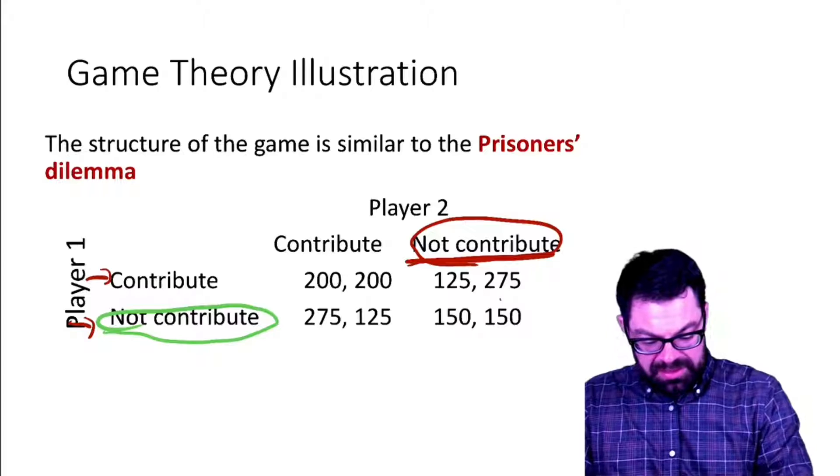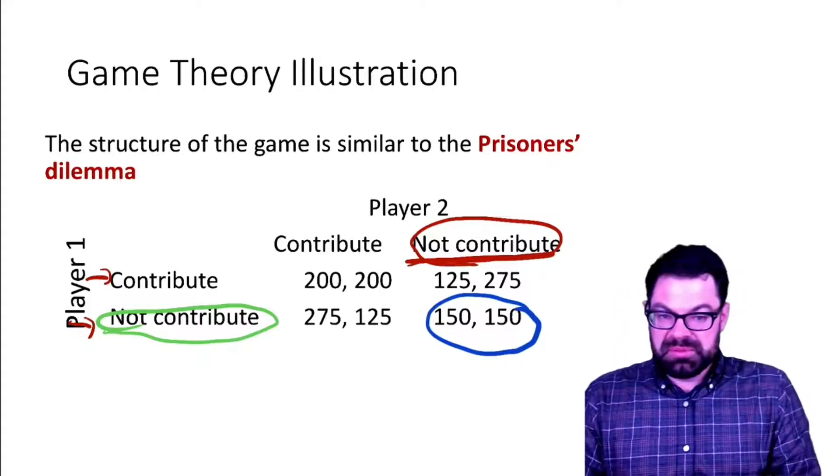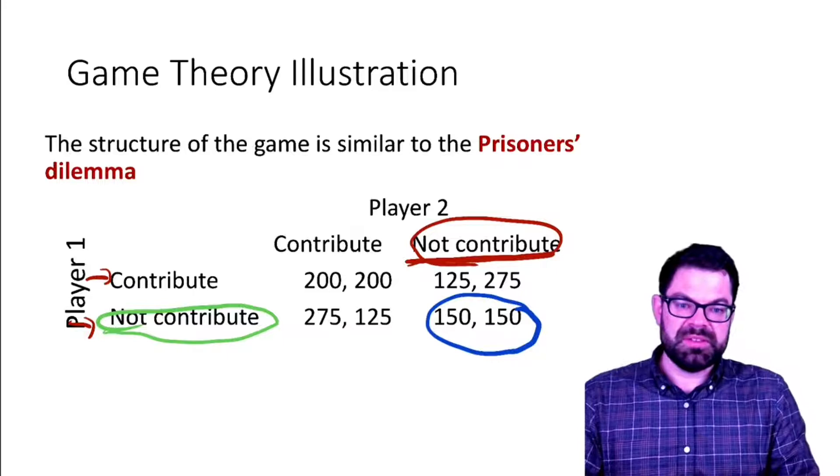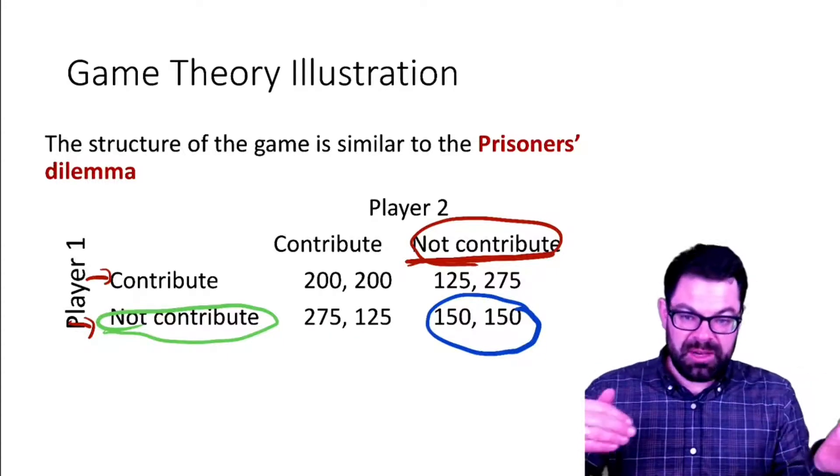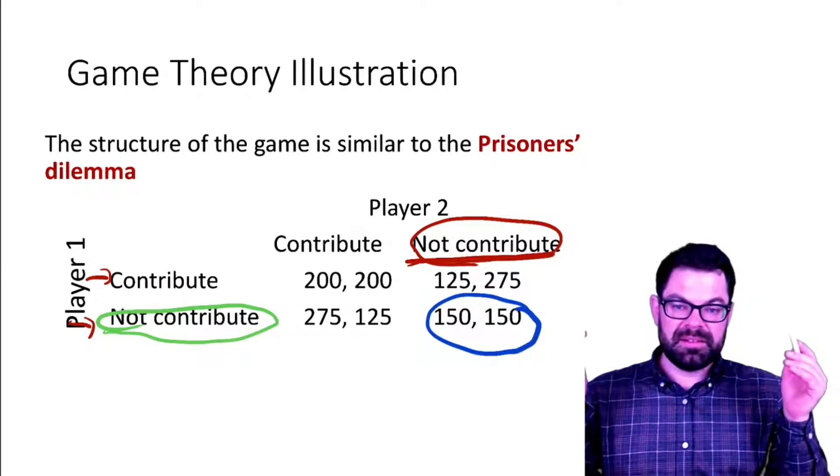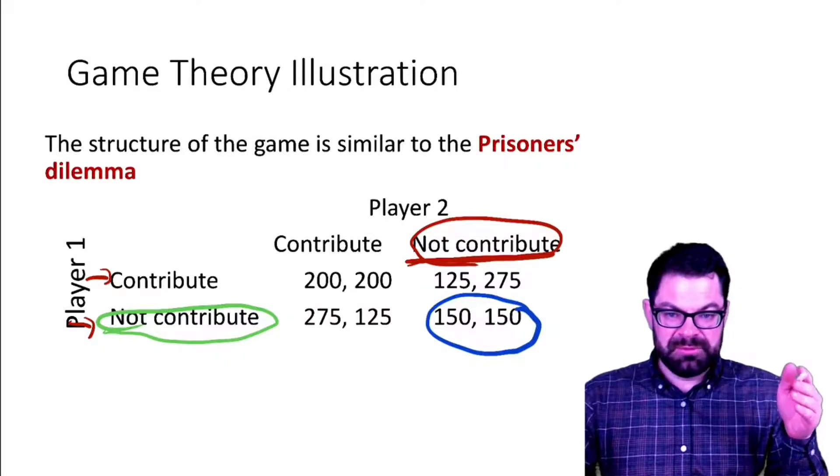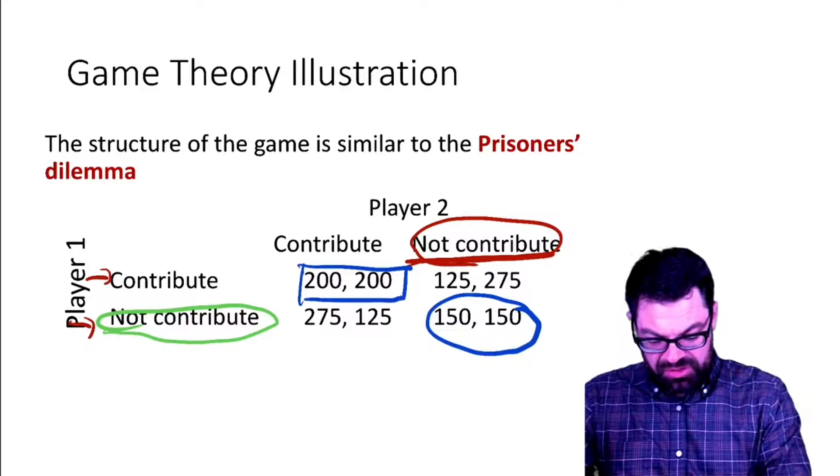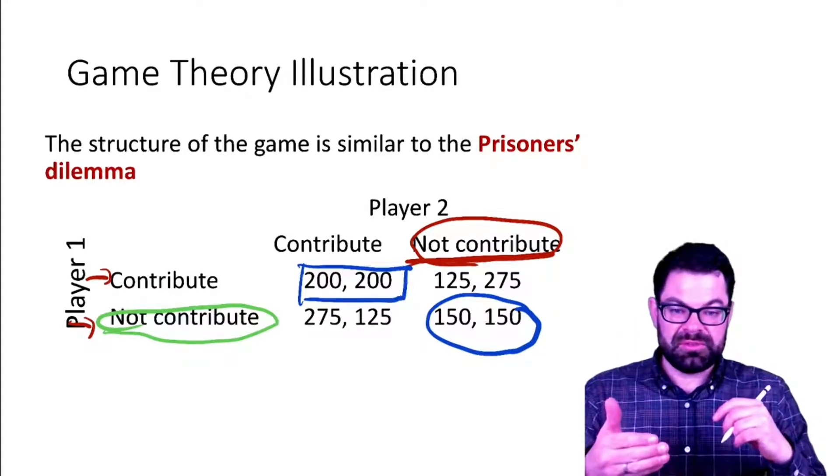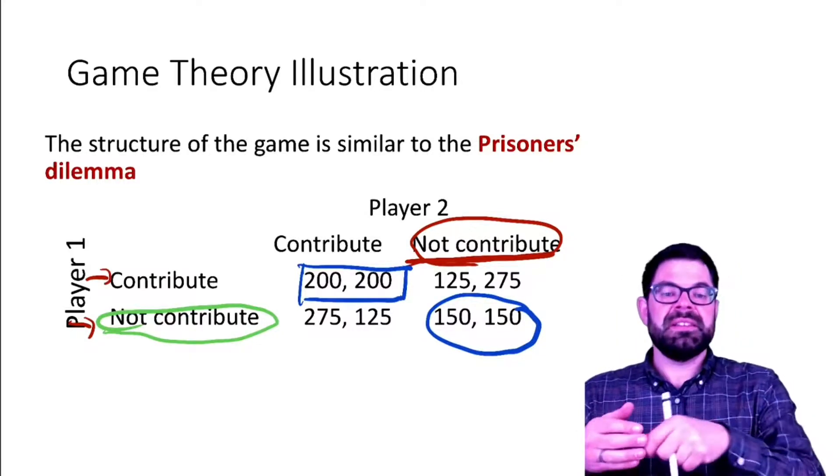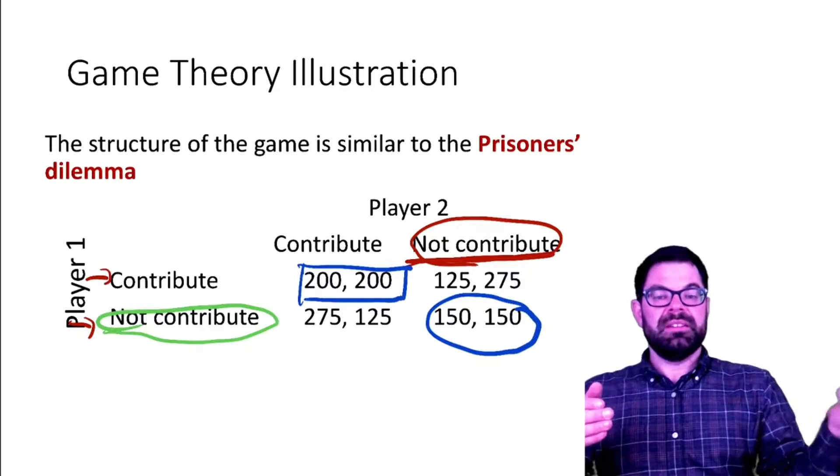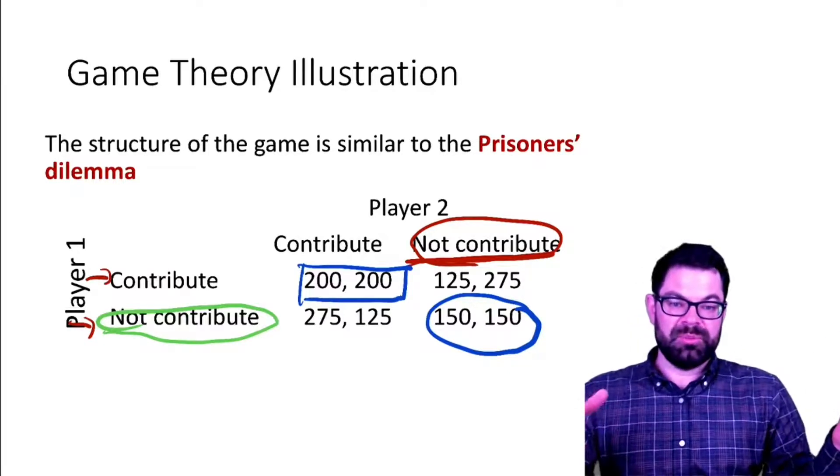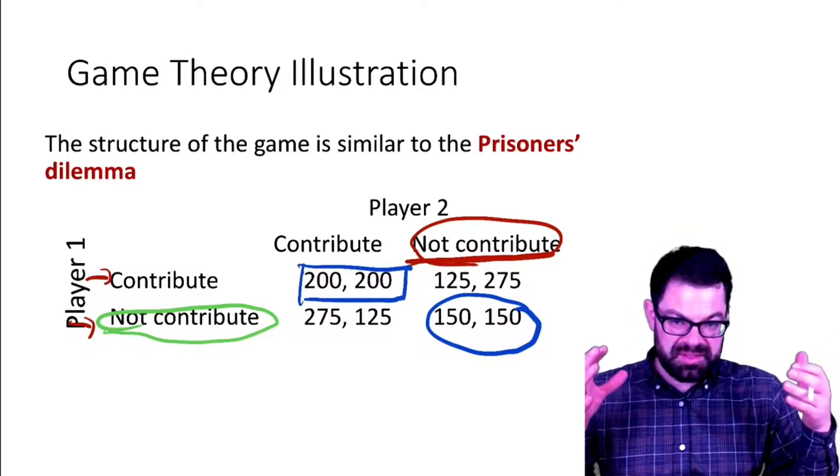What we are left with then is a situation where the equilibrium we converge on is the one where neither contributes because each has an incentive to free ride. Relative to the more beneficial scenario of each contributing and getting 200, each has an incentive to deviate.